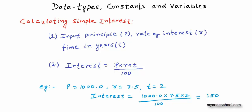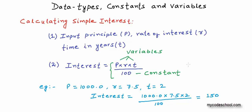If you look at this expression — p into r into t upon 100 — p, r, and t here are variables. Variables by general definition are things that can change. In this expression, p, r, and t can be anything. 100 in the denominator is a constant. A constant is something that won't change; 100 is 100 in any part of the world.